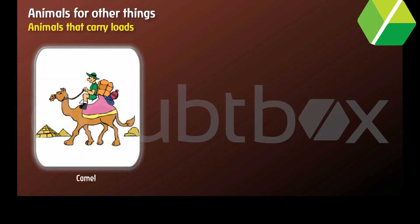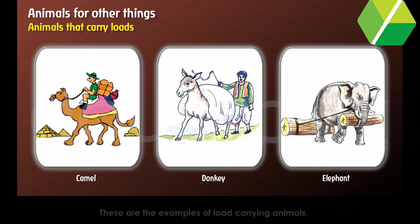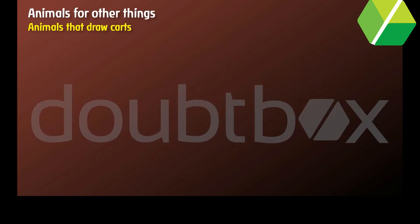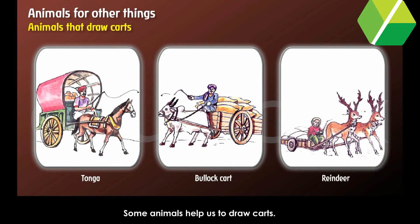Animals for other things. Animals that carry loads are called beasts of burden. The camel is called the ship of the desert. Some animals help us to draw carts, for example horse, bullocks and reindeers.